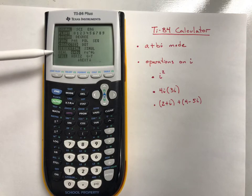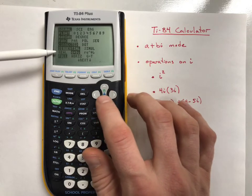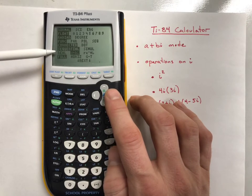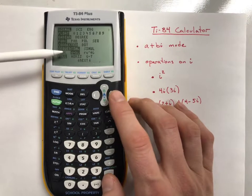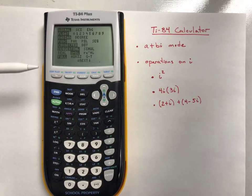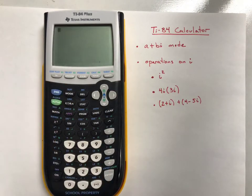It's likely that your calculator has real highlighted. If so, just arrow down to that row, move over to A plus BI, and hit enter so that it is highlighted. Then when you hit quit, you'll be able to use A plus BI mode.